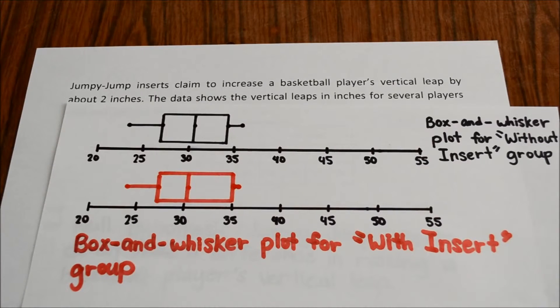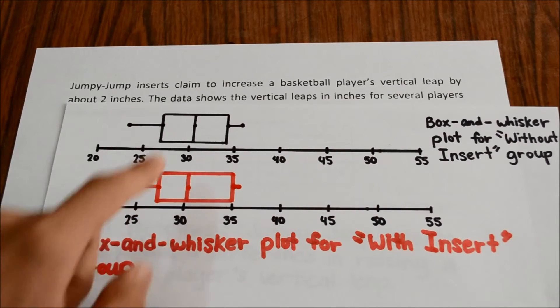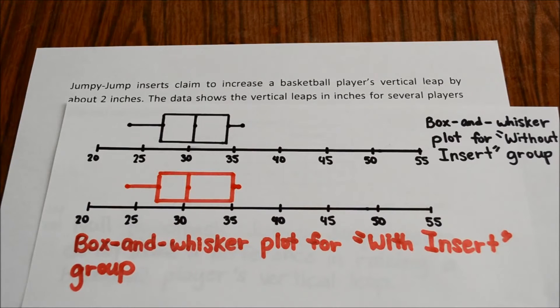This is because when you look at the two box and whisker plots there seems to be no change at all. Especially the median of both of these plots. This doesn't mean that the jumpy jump inserts actually makes no difference.